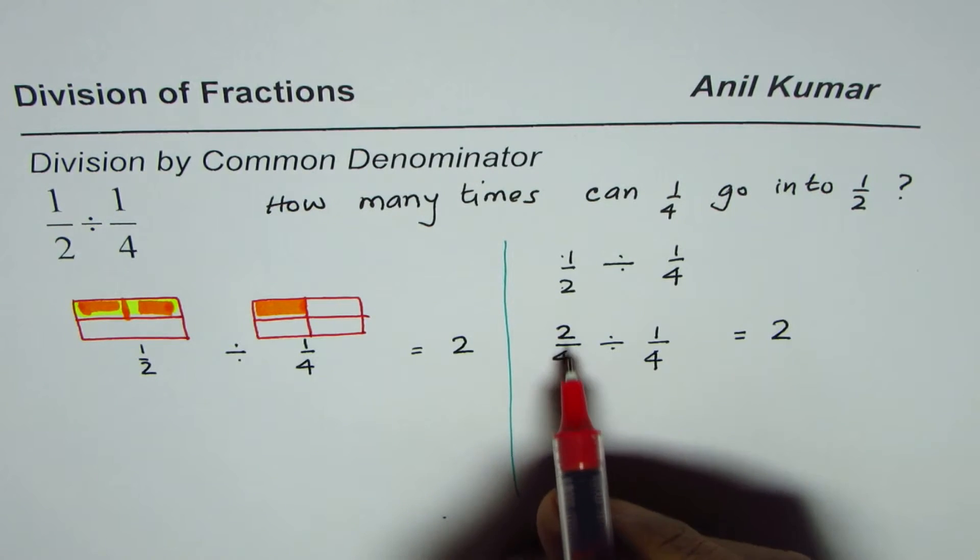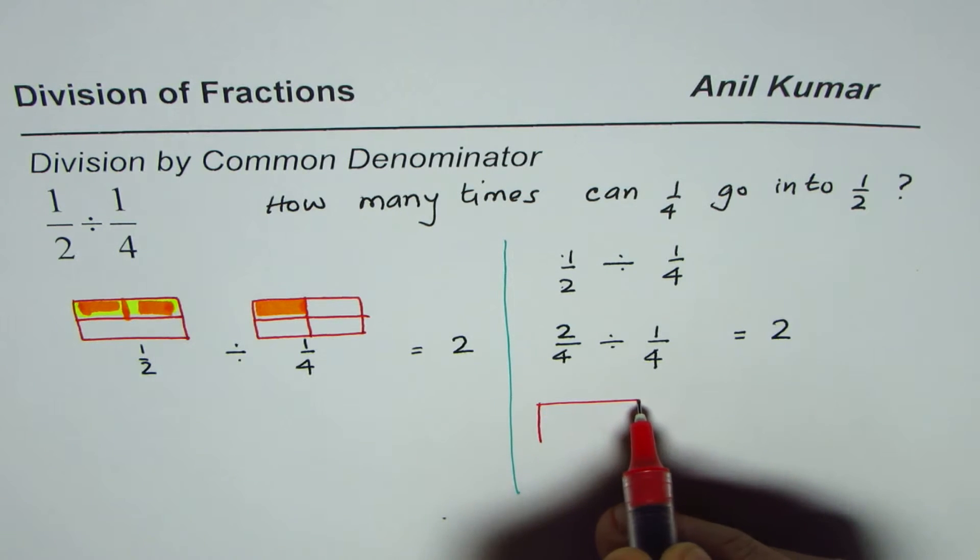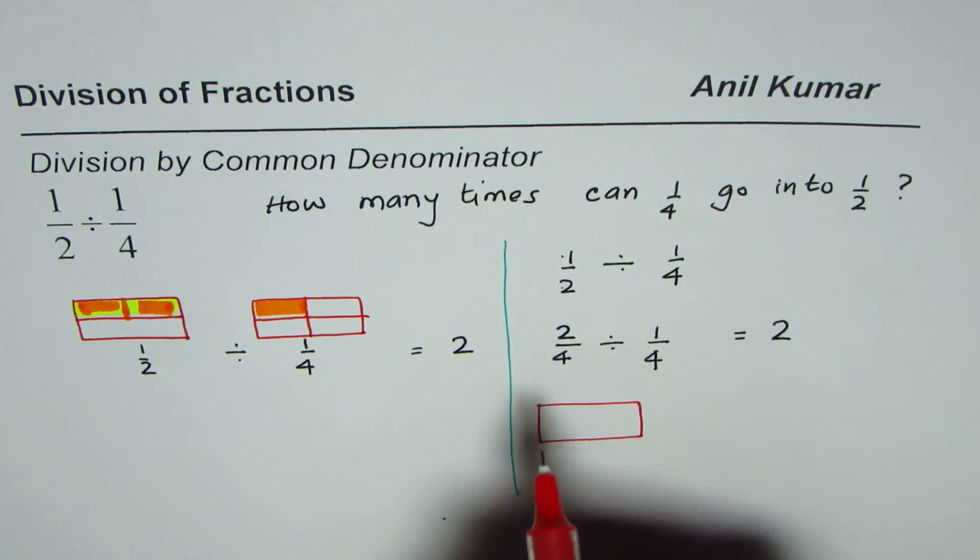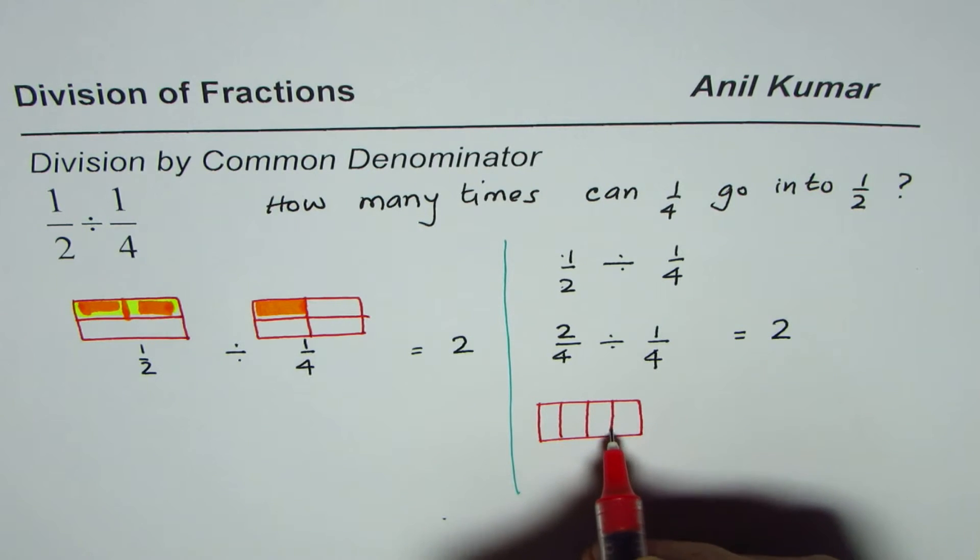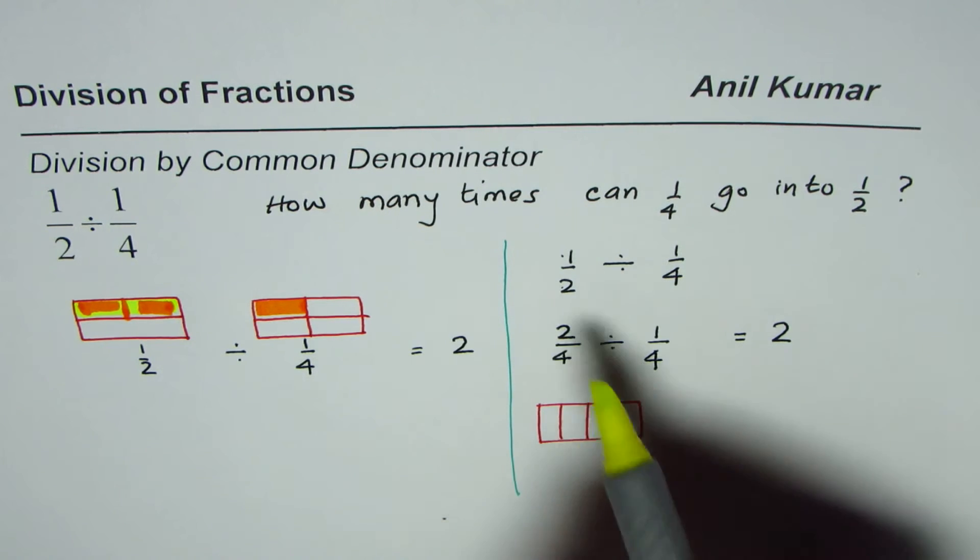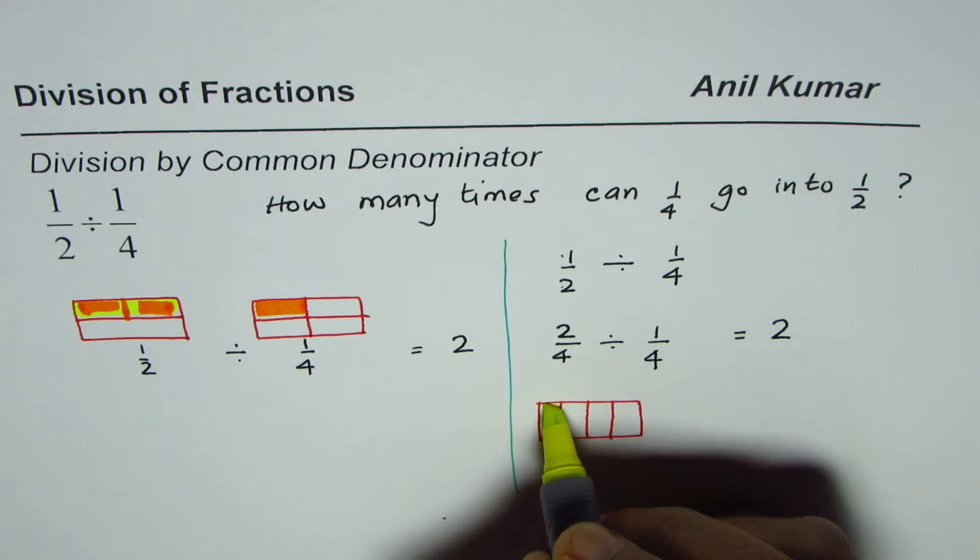Let us do two divided by four. We have a rectangle here divided into four equal parts—one, two, three, and four. We are selecting two out of four, so we shade these two parts.